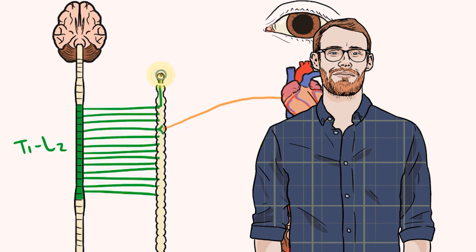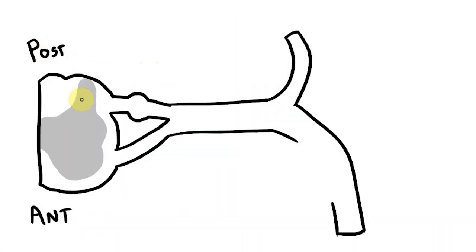I'll be running through all of these structures and hopefully explaining what the sympathetic chain is and why we have it. We'll start our drawing here with a superior view of a spinal nerve. If this image doesn't make any sense to you, I'd recommend looking at my previous video on spinal nerves and the somatic nervous system.